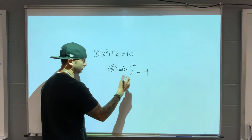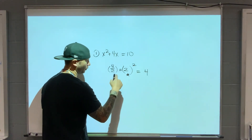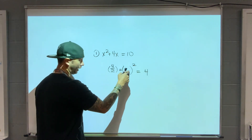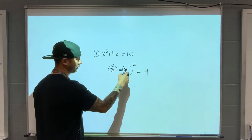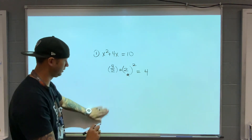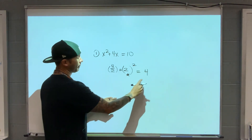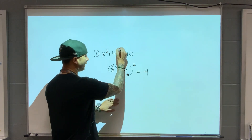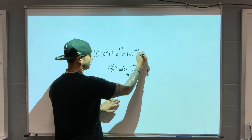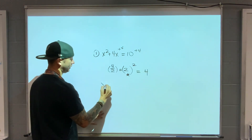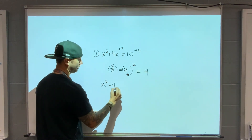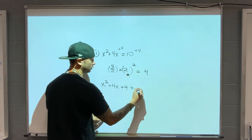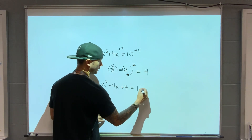A couple little notes: when I take half of the b value and I get 2, this is a very important value — it's going to show up in a minute. After I square it and get 4, I have to add 4 to both sides. So I'm going to get x squared plus 4x plus 4 equals 10 plus 4, which is 14.